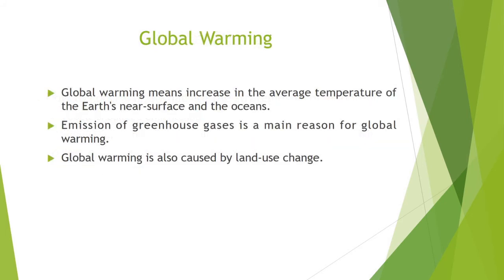What is global warming? Global warming means increase in the average temperature of earth's near-surface air and the oceans. Climate change results from global warming caused in turn by the presence and accumulation of greenhouse gases in the atmosphere. These gases — carbon dioxide and methane — are released into the air by burning of fossil fuels such as coal, oil and gas, as well as biomass. The emission of these greenhouse gases is the main reason for global warming.